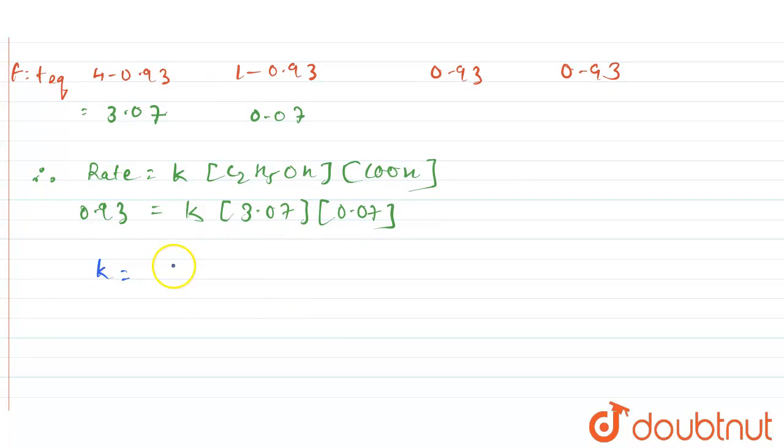So 0.93 divided by 0.2149, this will be equal to 4.32. So the equilibrium constant value is 4.32 in the second case.